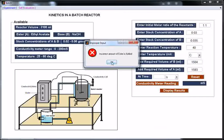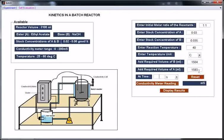Incorrect amount of ester is added. Correct it. And enter some time at which you want to see conductivity meter reading. Let us take 10 seconds and click the button conductivity meter reading. This is the conductivity after 10 seconds of the reaction.